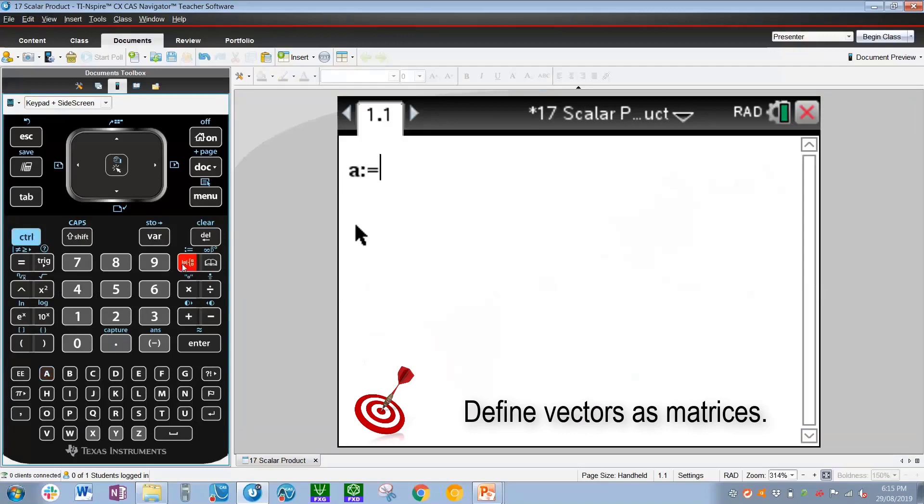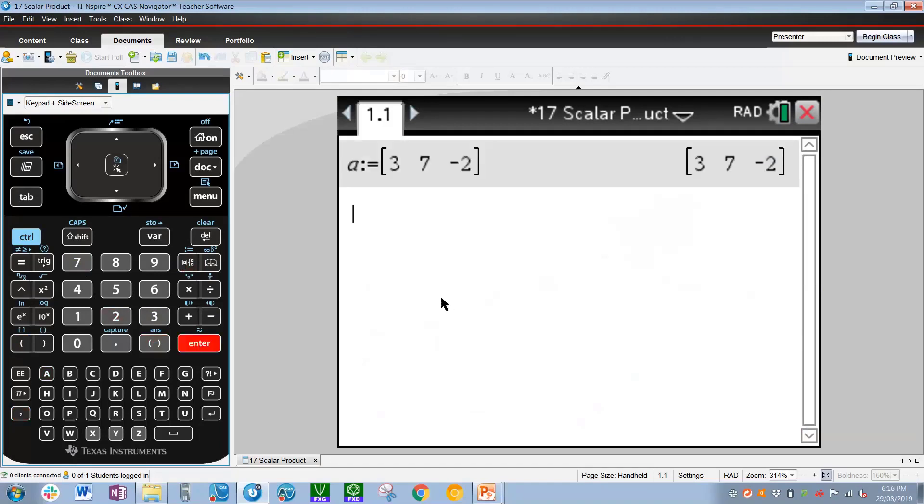So the first vector, we're going to define it as a, ctrl equal, and then ctrl open square bracket. To type in a vector, we use square brackets separated by commas. So the components of vector a are 3, 7, -2, press enter, and there is a.